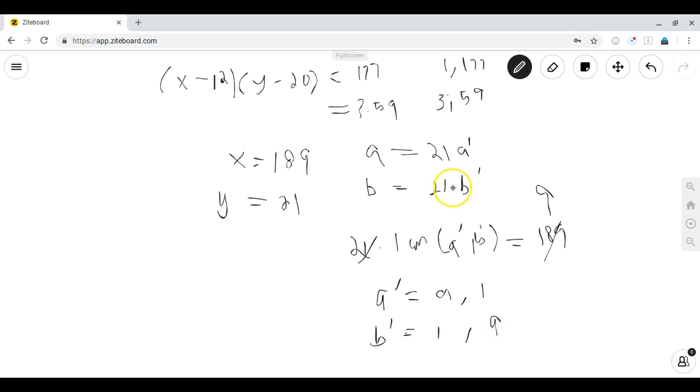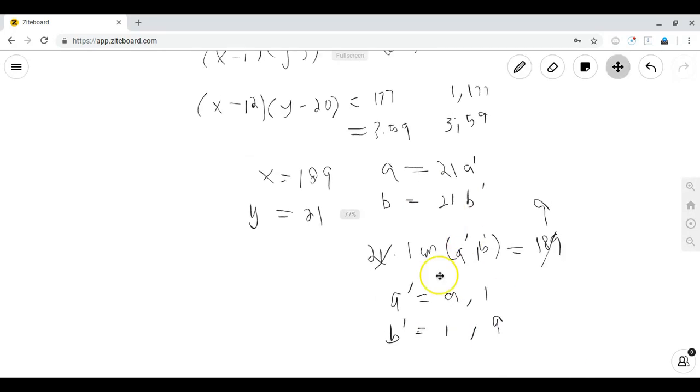And plugging this back in, we see a equals 189 and b equals 21, or a equals 21 and b equals 189. So we have two solutions here.